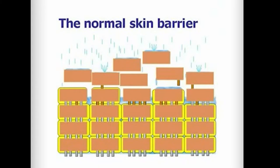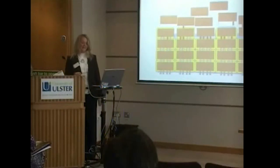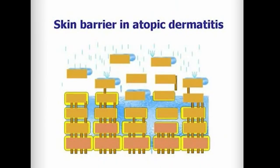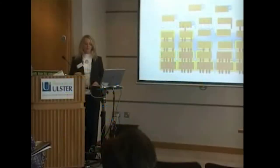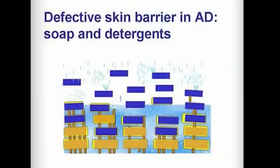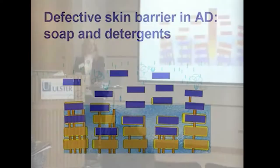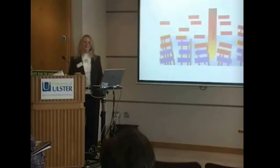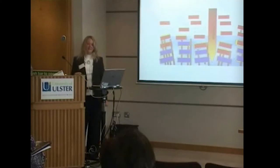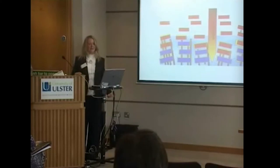If we look at the normal skin barrier, you can see that there is natural shedding of skin in the top layers, and this is quite normal. If you get skin with atopic dermatitis or atopic eczema, you can see that the corneodesmosomes are broken down further, because of the increased production of proteases. If you add harsh soap and detergents to the skin, they break down even further. This allows the penetration of allergens and irritants into the skin, which can cause a flare of atopic eczema.